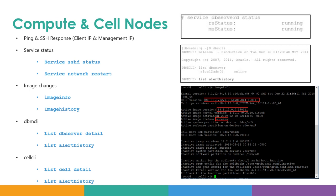For the storage server, you have cellcli, which is a command line interface to report any issues with respect to the storage server. You can log in using the cellcli command and then run 'list cell detail', which gives all the details about the cell server — including process status like RS and MS processes, how long the system has been up, and whether there are any issues. The 'list alert history' command gives you the recent alerts reported in the cell server.